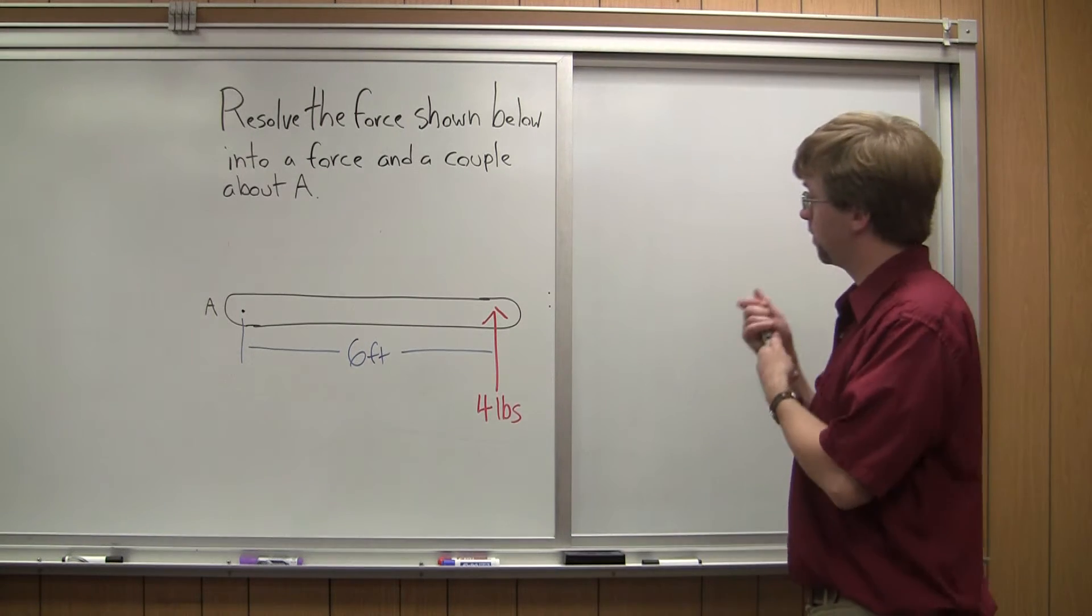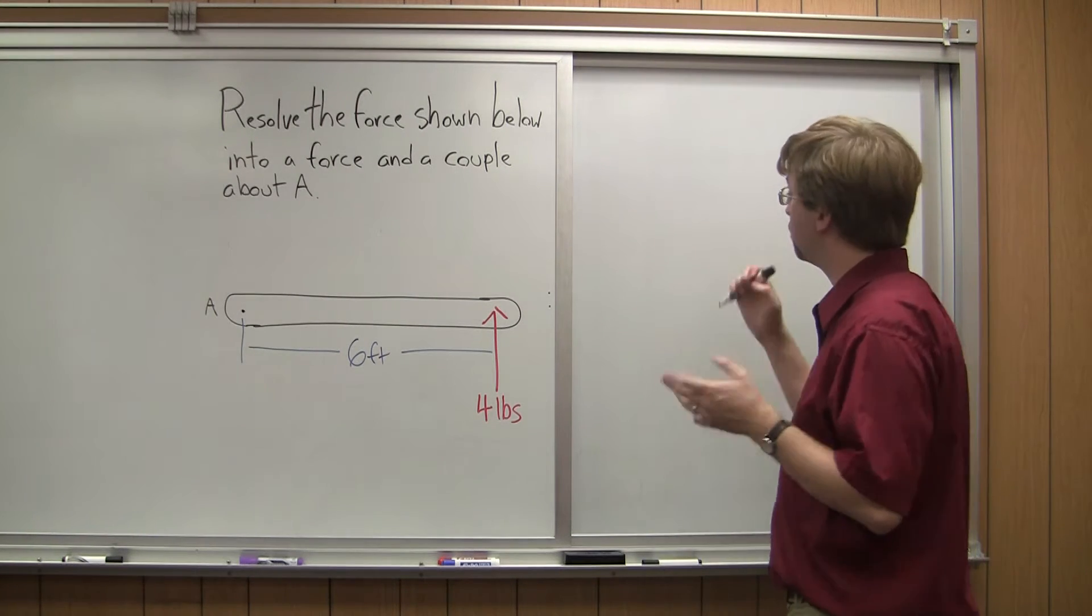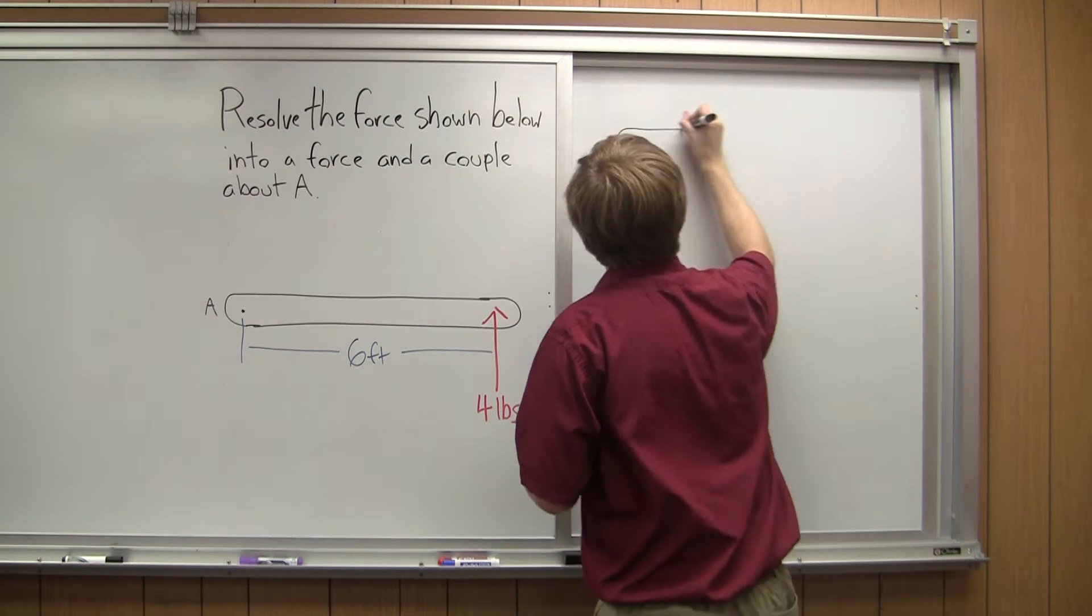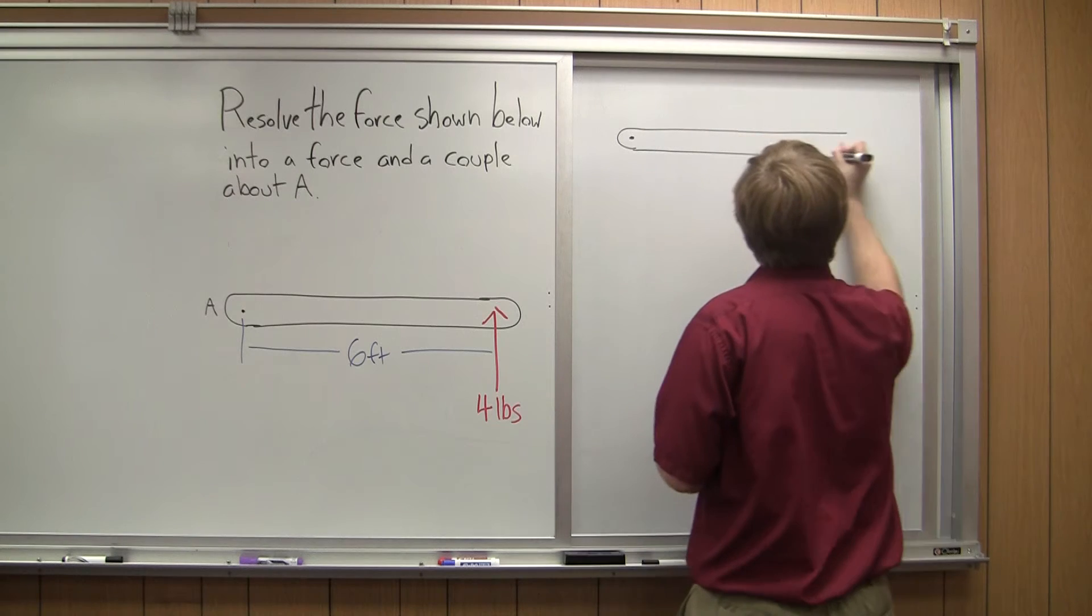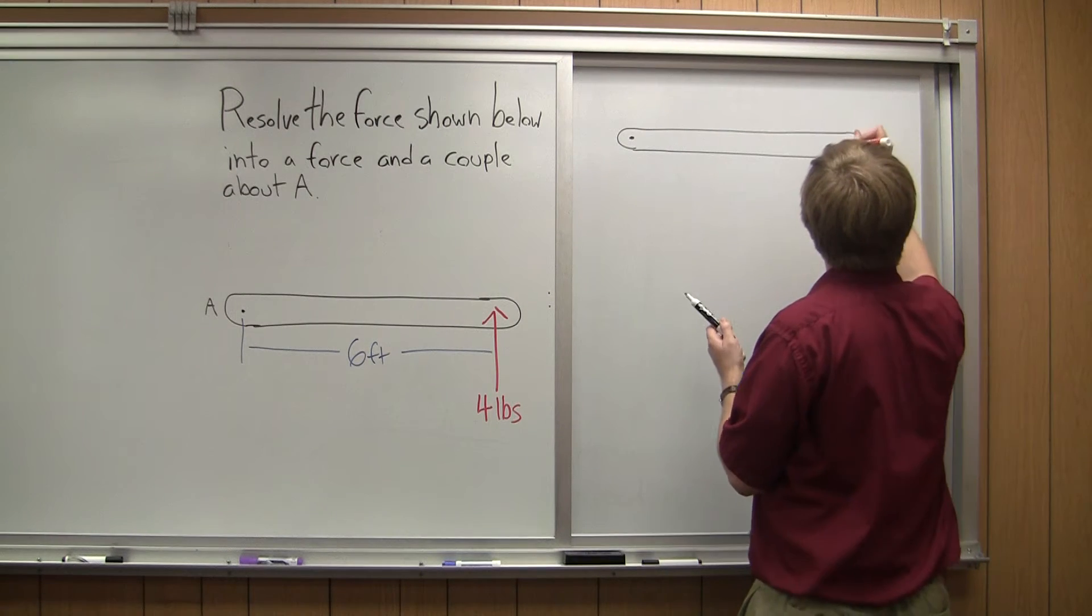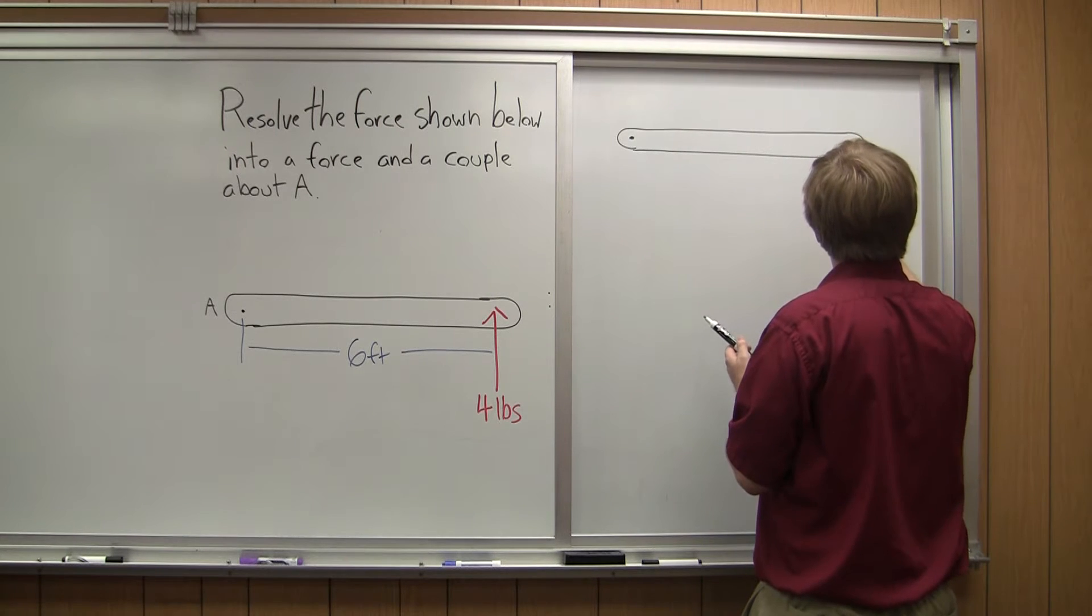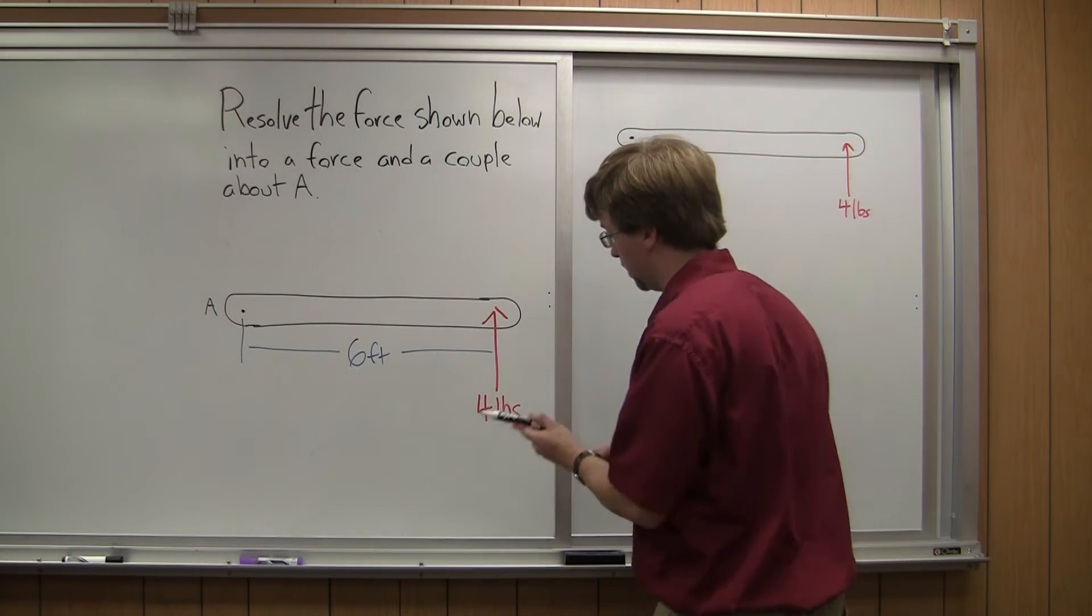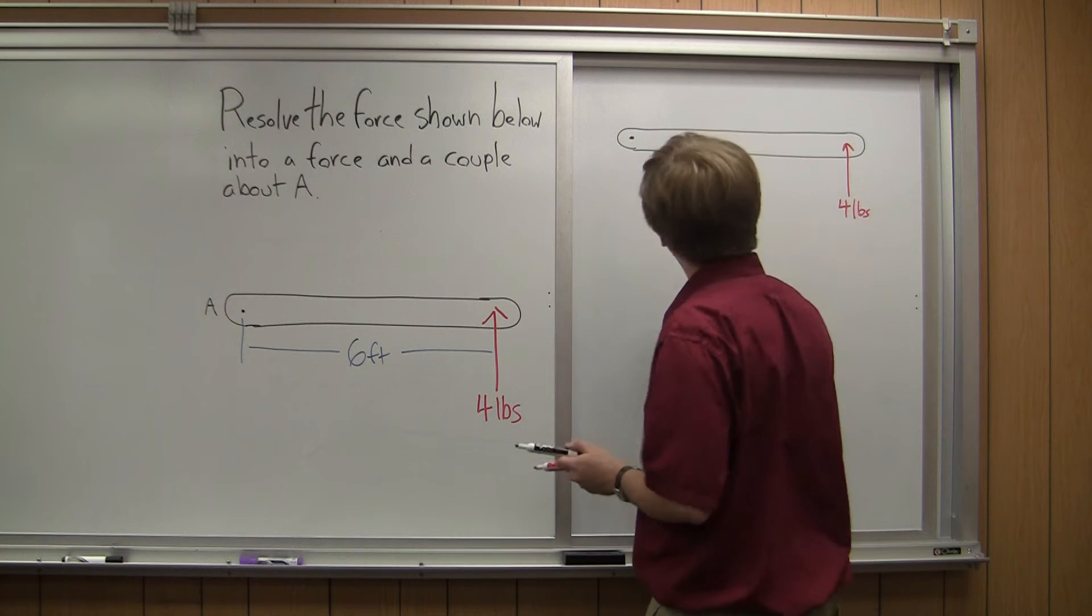So, the first thing I'm going to do is redraw this out. So I've got point A over here. I've got a beam, and acting on this beam, I've got my 4-pound force. And I know that the distance is going to be 6 feet.